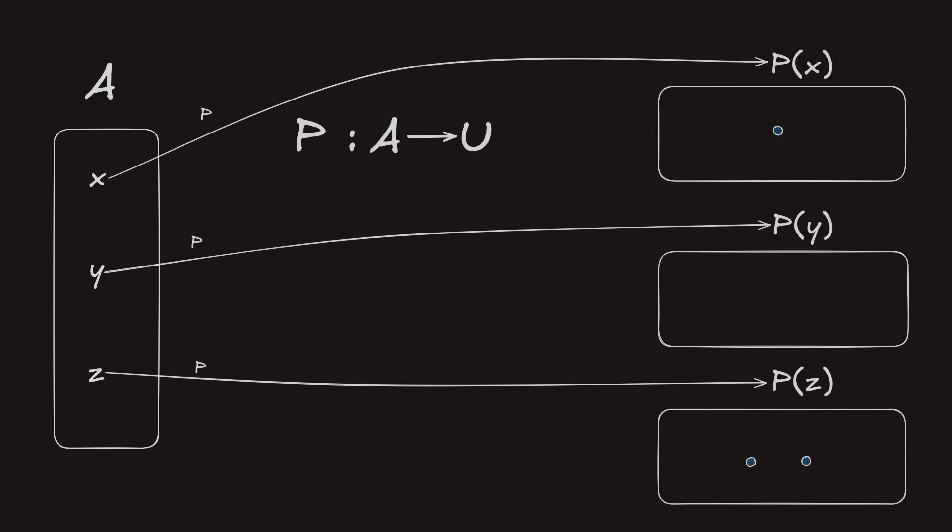Suppose we had a type A and suppose we had a type family P that maps every term in A to some proposition about that term.